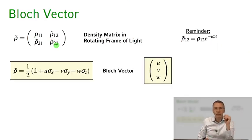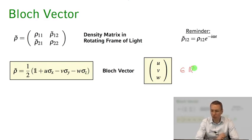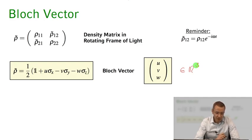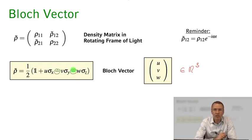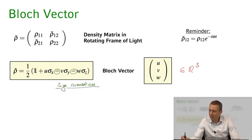For this tilde density matrix, we can use the same decomposition into Pauli matrices sigma-x, sigma-y, and sigma-z. We now introduce the three components that make up the Bloch vector: u, v, and w. All three are real components describing the state of the density matrix in the rotating frame of light. There is a sign convention we use here, introducing minus signs in front of the sigma-y and sigma-z terms. Be careful when comparing Bloch vectors across textbooks to make sure you are using the same sign convention.